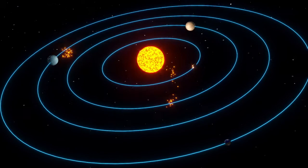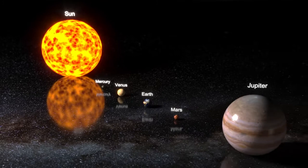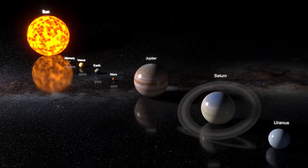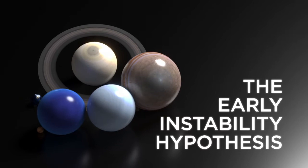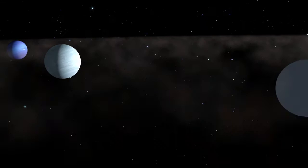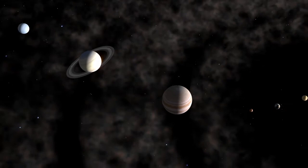The Grand Tack Hypothesis had its strengths and weaknesses in explaining the formation of the solar system as we observe it today, and it helped to explain the Late Heavy Bombardment as a result of the gas giants' orbital swings. But there came another, even more plausible model called the Early Instability Hypothesis. It implies that at the time the planets were just forming from the protoplanetary disk, the orbits of the planetesimals were highly unstable. The gas giants formed first, followed by the rocky inner planets. Computer simulations suggest that initially there was an additional icy giant planet orbiting the Sun.